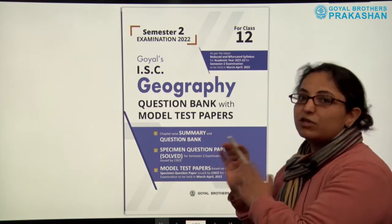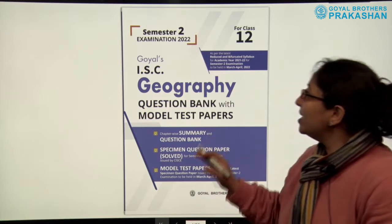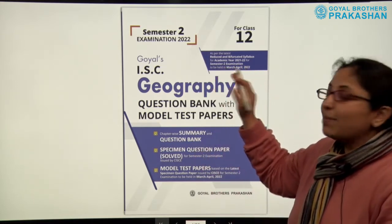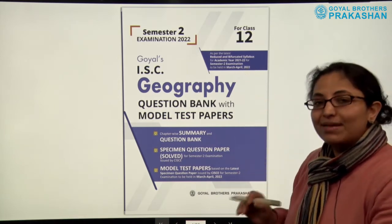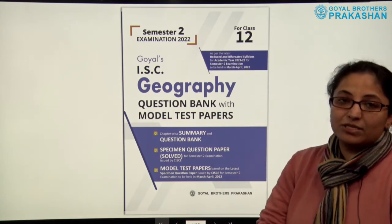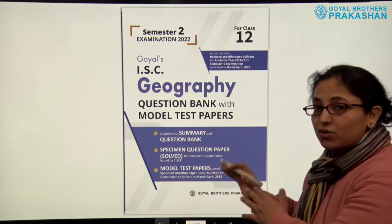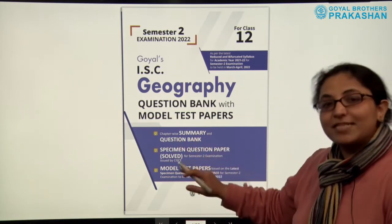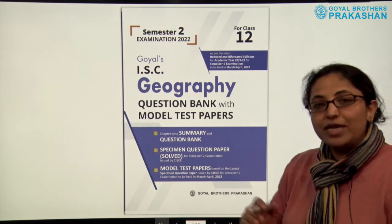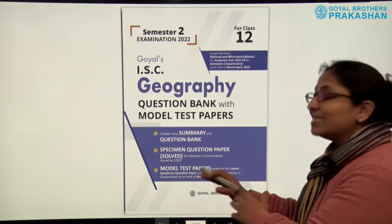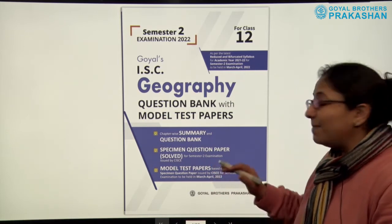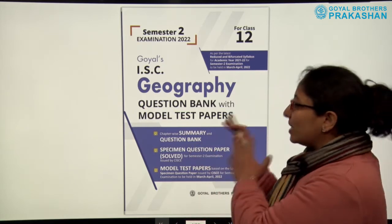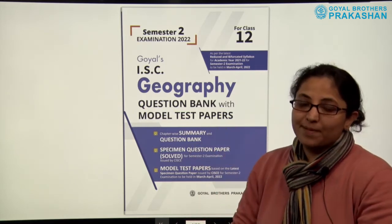This is the book for geography. It is based on the reduced and bifurcated syllabus for academic year 21-22 for semester 2 examinations. This book includes chapter-wise summary and question bank. It has the Specimen Question Paper solved, released by the Council, and it has Model Test Papers which are based on the Specimen Question Paper. This book is a question bank with Model Test Papers.